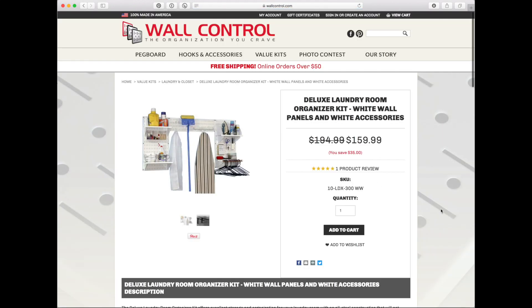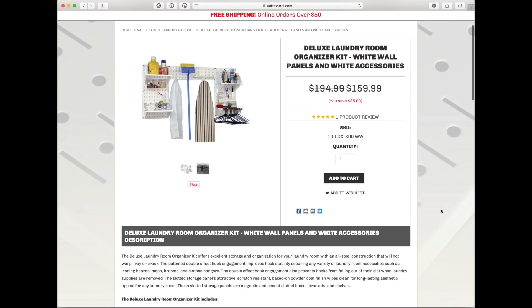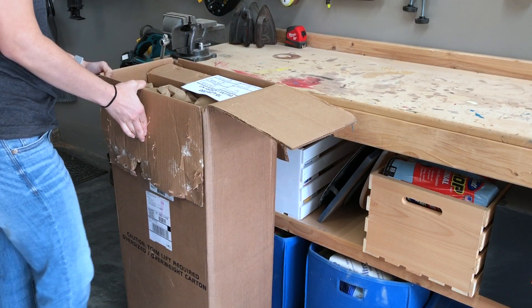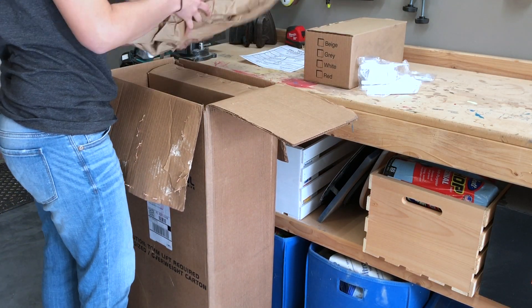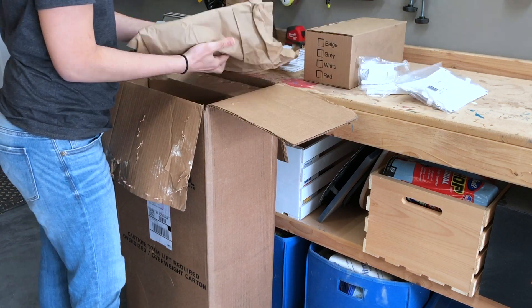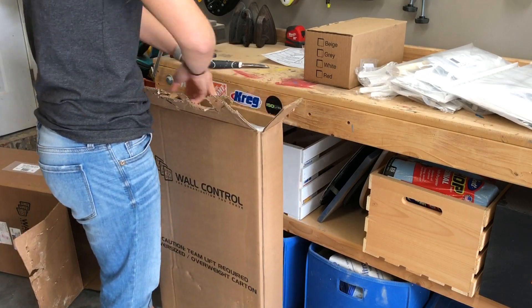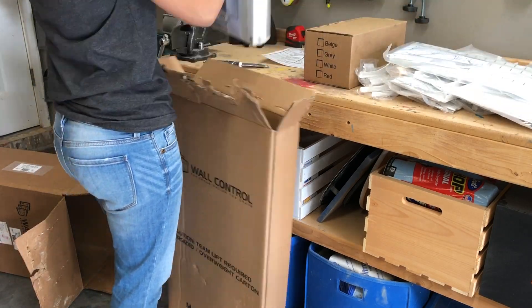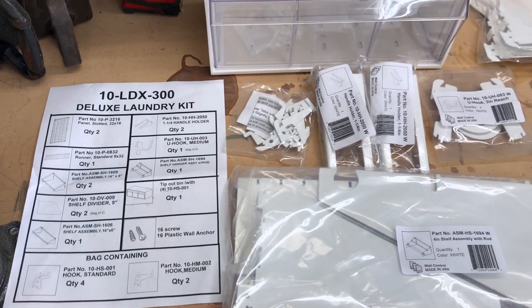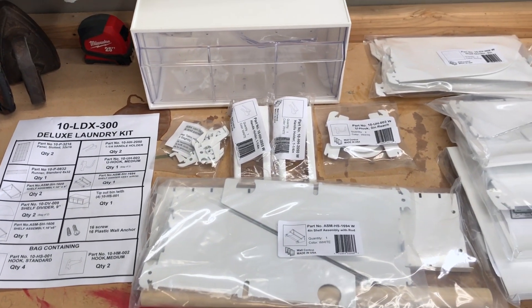We ordered the kit through the Wall Control website, and it's a very seamless process. It comes packaged very well, with all the pegs bagged and wrapped, and the panels themselves are in a separate box. There's an easy guide to show you all the parts that are included in the kit.